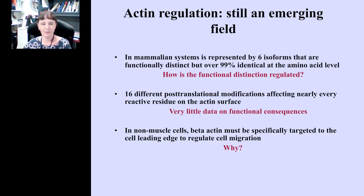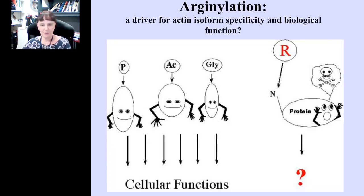There is very little understanding of how this functional distinction among isoforms is regulated. A second mystery concerns actin post-translational modifications — there are 16 different PTMs shown to affect nearly every reactive residue on the actin surface, but very little is known about their functional consequences. Another mystery concerns specifically the beta-actin isoform, one of the most abundant and uniformly expressed isoforms in non-muscle cells. Beta-actin has been shown to be required for cell migration and may be specifically targeted to the cell leading edge, but nobody has a clear understanding of exactly why this is required.